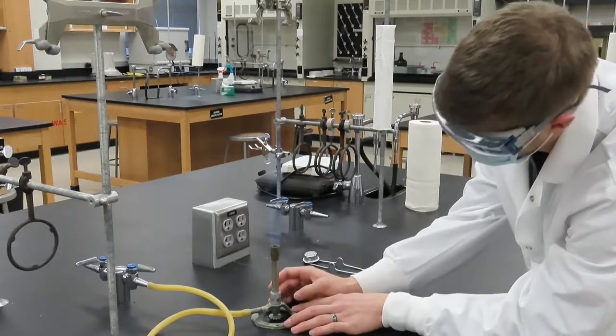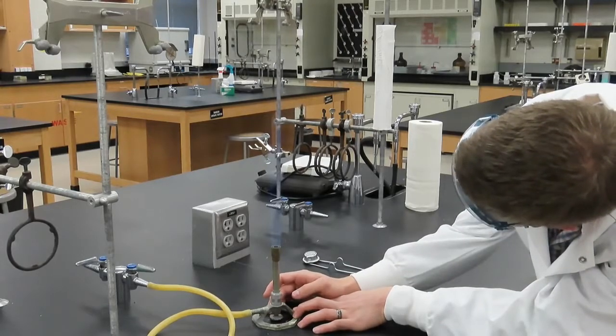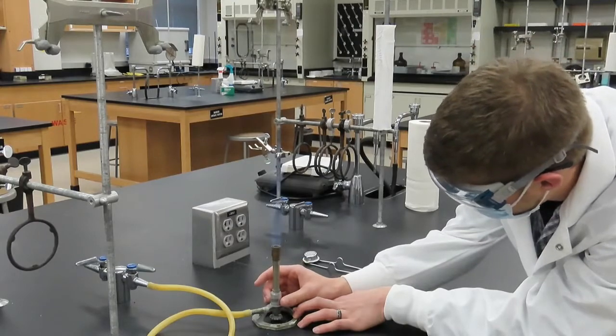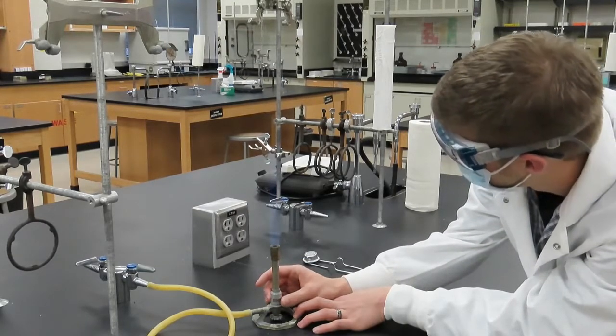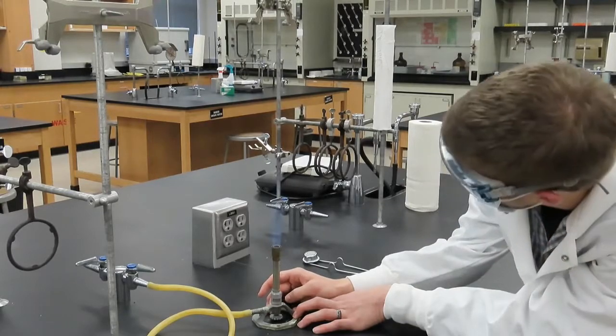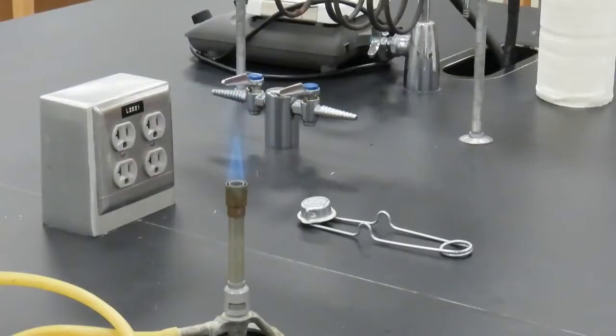To produce a very high flame, the gas valves and the collar are both adjusted until an inner blue cone appears. The top of this inner blue cone is the hottest part of the flame.